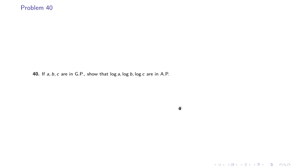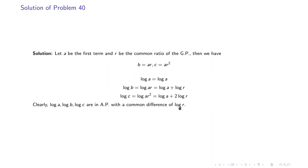Problem 40: if A, B, C are in GP, show that log A, log B, log C are in AP. Taking R as the common ratio and A as the first term, log A = log A, log B = log(AR) = log A + log R, and log C = log(AR²) = log A + 2 log R. So log A, log B, log C are in AP with common difference log R.